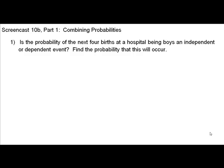In the screencast for 10b, Combining Probabilities, we will be looking at three topics. The first, independent or dependent events. The second, overlapping or non-overlapping events. And then in a separate screencast, 10b part 2, the at least rule.